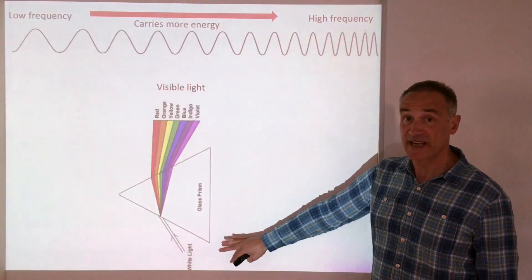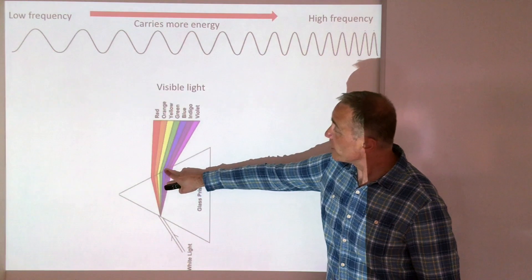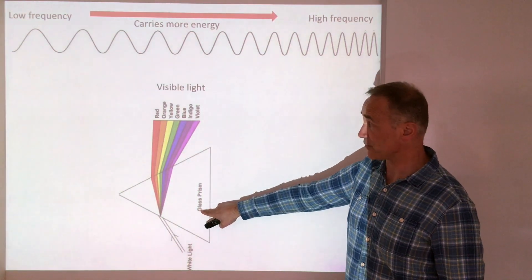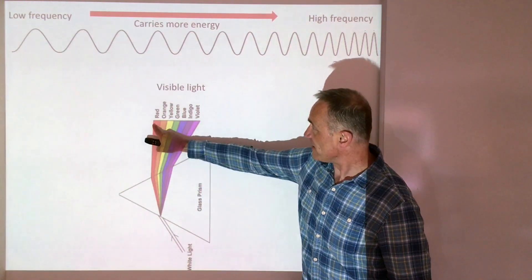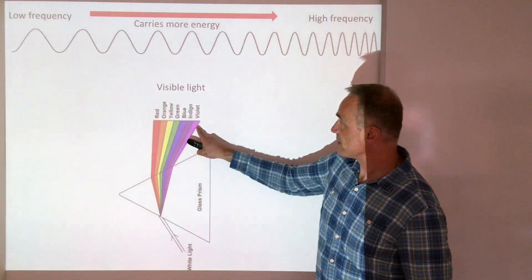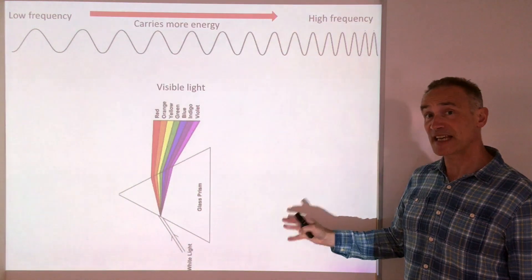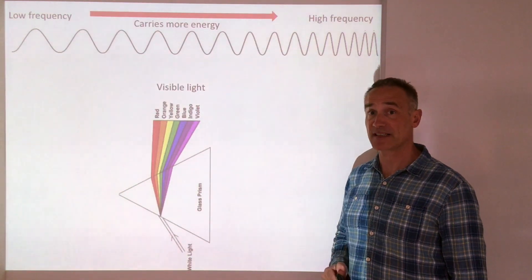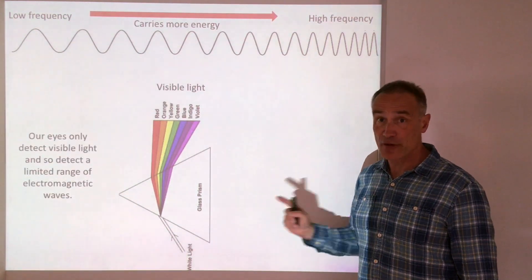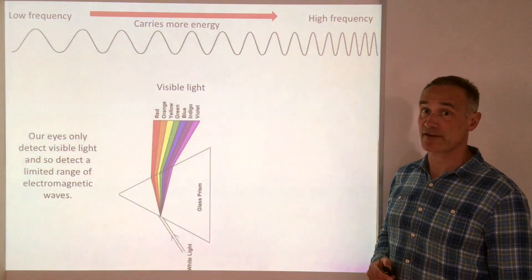Remember, white light can be split into all the colors of the spectrum using a prism and refraction. Red light has a larger wavelength and violet light has a smaller wavelength. Light is one part of the electromagnetic spectrum and it's the only part that we can detect with our eyes.